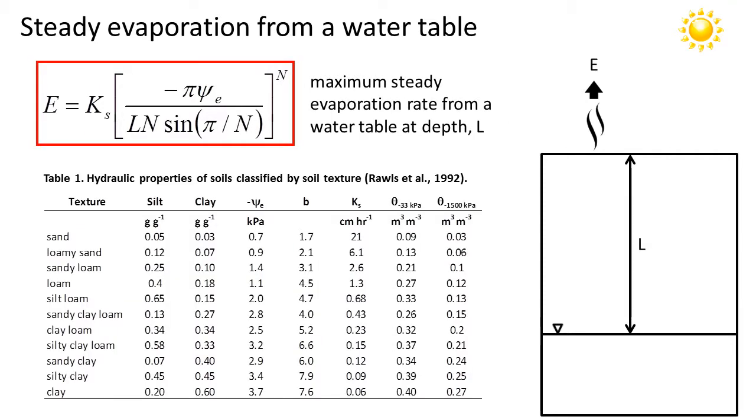To use this formula, we'll need to know the soil properties corresponding to the Campbell model. So I've given you here a table, which is based on the work of Rawls et al., 1992. And this shows, for different soil textures, values of the air entry potential, the B exponent, and the saturated hydraulic conductivity. So by selecting a soil texture, in this case we'll start with clay loam, we can read off the values of the parameters that we need for this calculation.